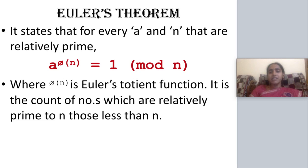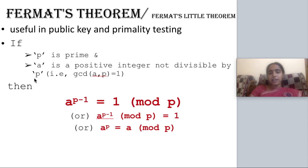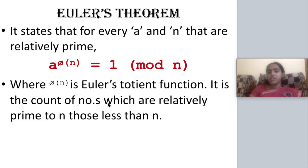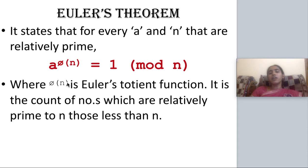Now let us see the next theorem: Euler's Theorem. It is similar to Fermat's Theorem. Here, instead of P we have phi of n — that is the difference. It states that for every A and n that are relatively prime (meaning their GCD must be 1), A power phi(n) is equal to 1 mod n. Phi of n is Euler's totient function, which gives the count of numbers less than n that are relatively prime to n.